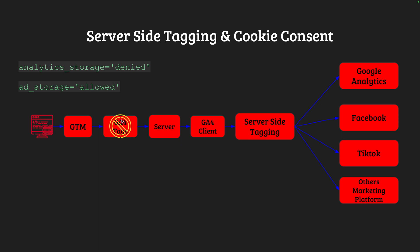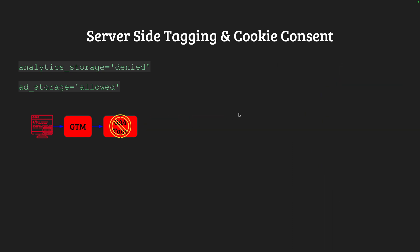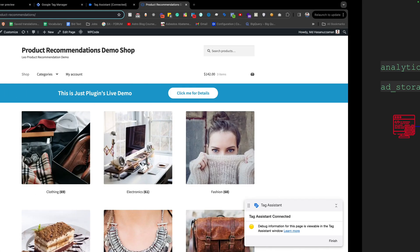In this structure, when analytics storage is denied we are blocking GA4, but ad storage is allowed. When GA4 is blocked, no data goes to the server, so we are not able to send data for Facebook, TikTok, and other marketing platforms — but they should receive data because analytics storage is denied, not ad-related storage. So with this setup, everything gets blocked. We need a different approach so we can block analytics tags but still send information to marketing-related tags on our server.